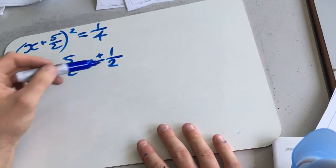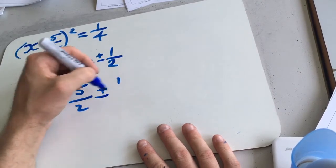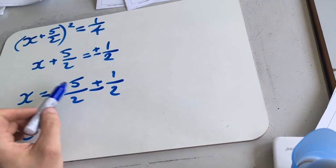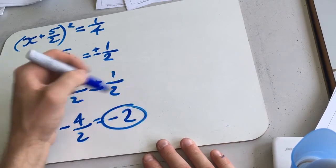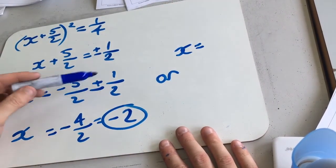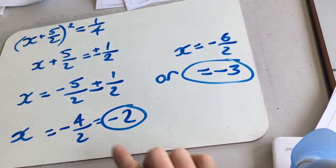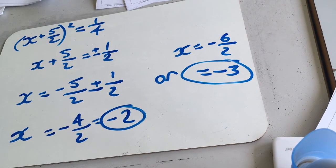Then we're going to take 5 over 2 from each side. So x is minus 5 over 2 plus or minus 1 half. So minus 5 over 2 plus 1 half is going to be minus 4 over 2, which is minus 2. Or we get x is minus 5 over 2 minus 1 half, which is going to be minus 6 over 2, which is minus 3. So x is minus 2 or minus 3. So that's great. I am going to take all this one.